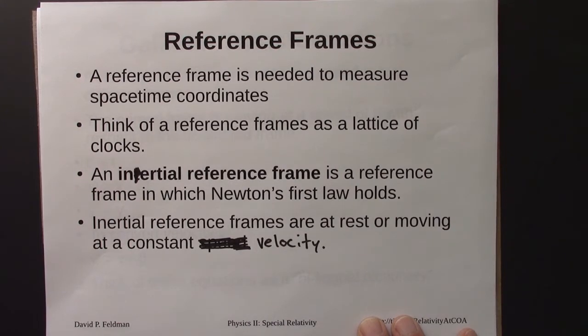That law, often called the law of inertia, says that objects at rest stay at rest, objects in motion continue in motion, unless acted on by a net force. As a practical matter, an inertial frame is just one that's at rest or moving with a constant velocity.